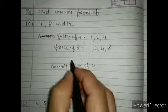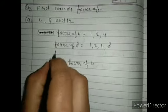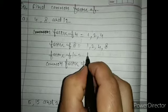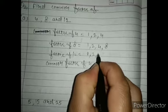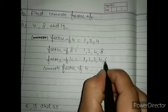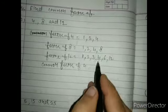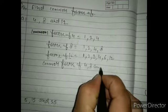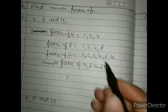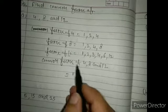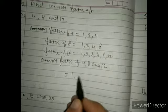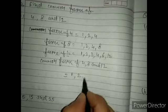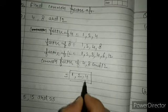Factors of 12 are 1, 2, 3, 4, 6, and 12. Now find the common factors of 4, 8, and 12 — check all three numbers. 1 is in all three. 2 is also common, and 4 is also common. So the common factors of 4, 8, and 12 are 1, 2, and 4.